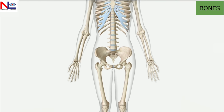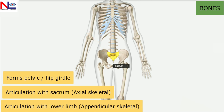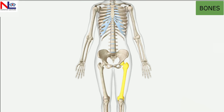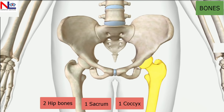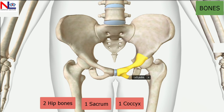Posteriorly, the hip bones articulate with the sacrum, which is part of the vertebral column and axial skeletal system. Inferiorly, they articulate with the lower limb, which is part of the appendicular system. In the maternal pelvis, we'll discuss in detail the two hip bones — consisting of three separate bones: ileum, ischium, and pubis — which fuse together. There is also one sacrum and one coccyx.